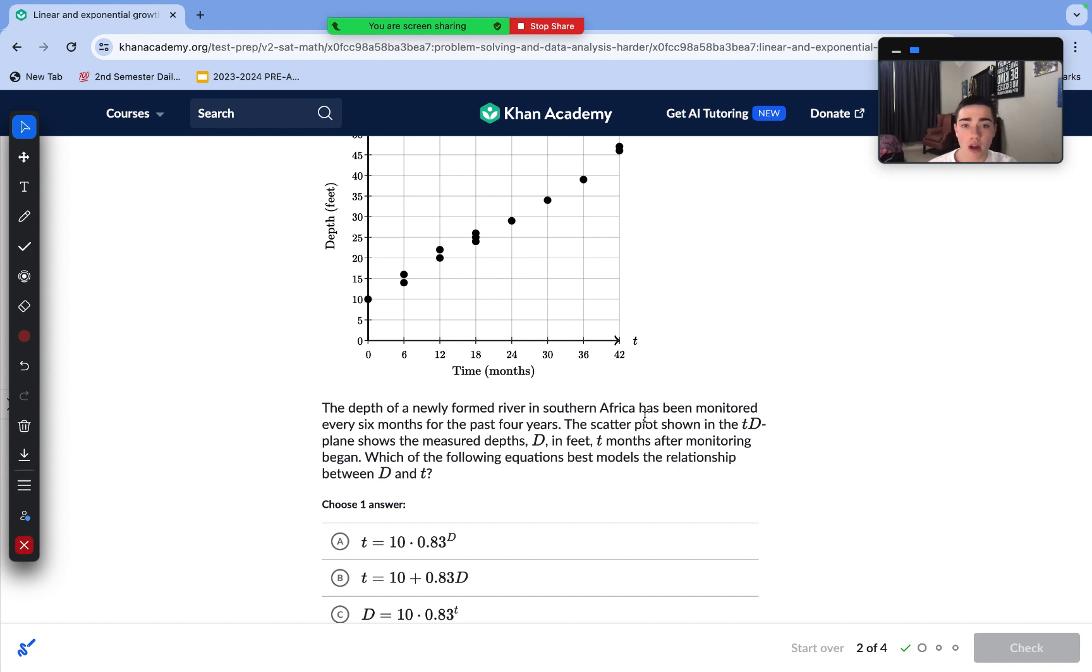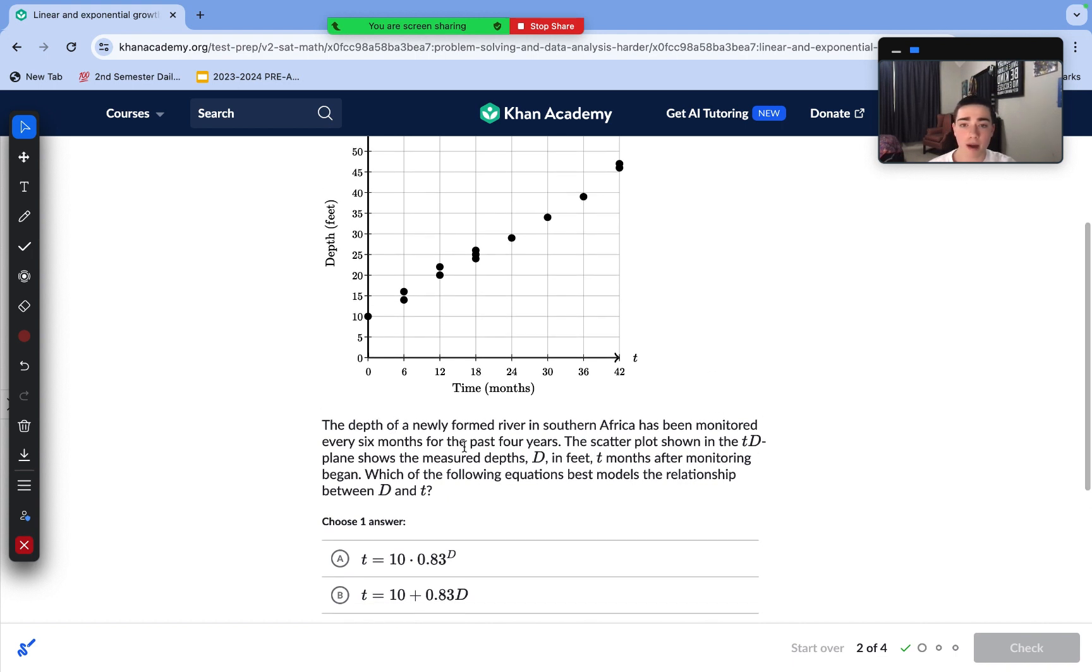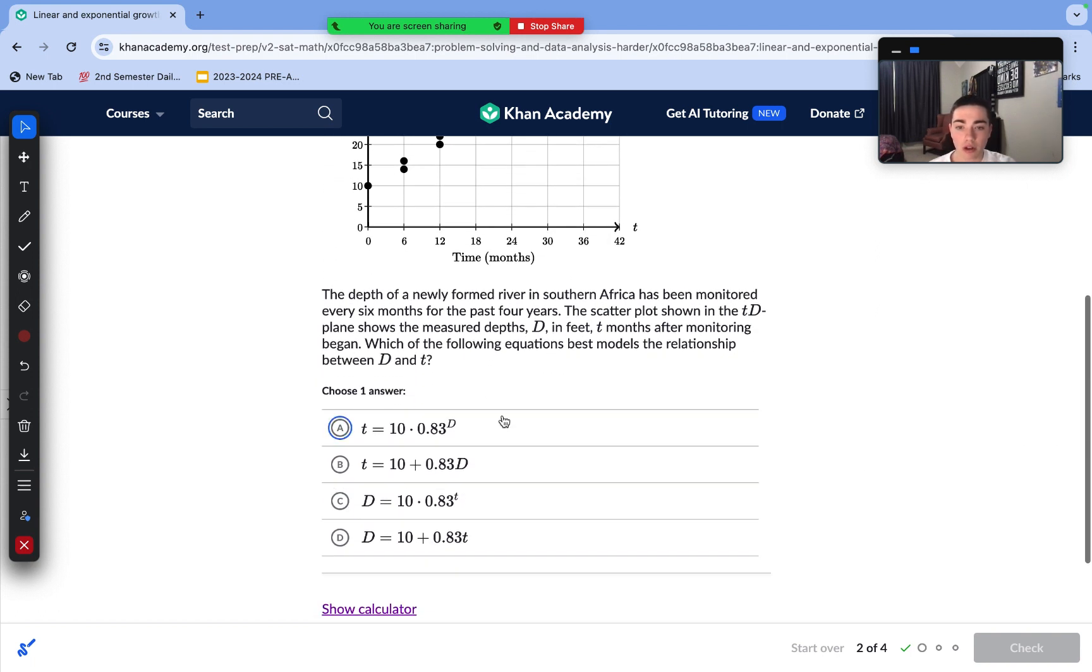On to question number two. The depth of a newly formed river has been monitored every six months for the past four years. The scatter plot shows the measured depths in T months after monitoring the relationship. Which of the equations best models the relationship between D and T? So we need to determine each of these relationships. First, classify them.